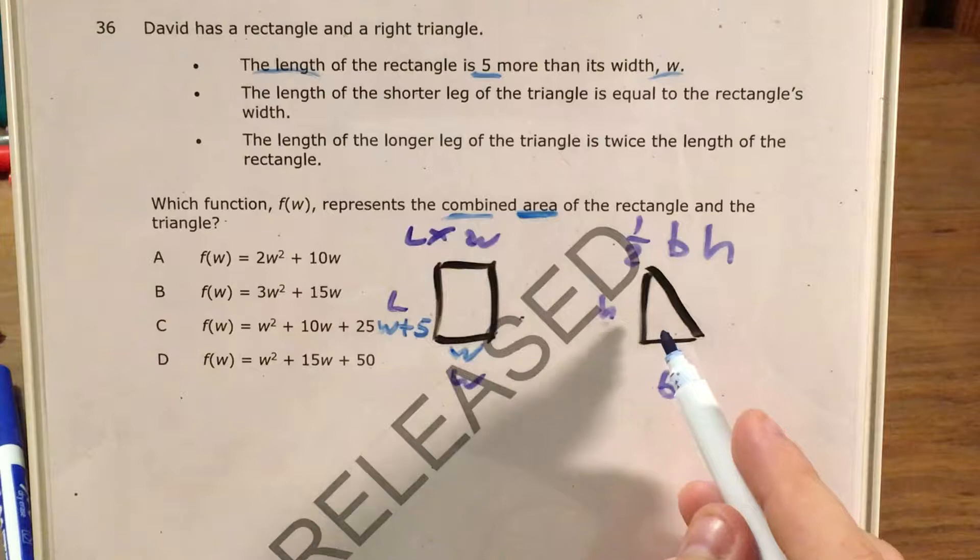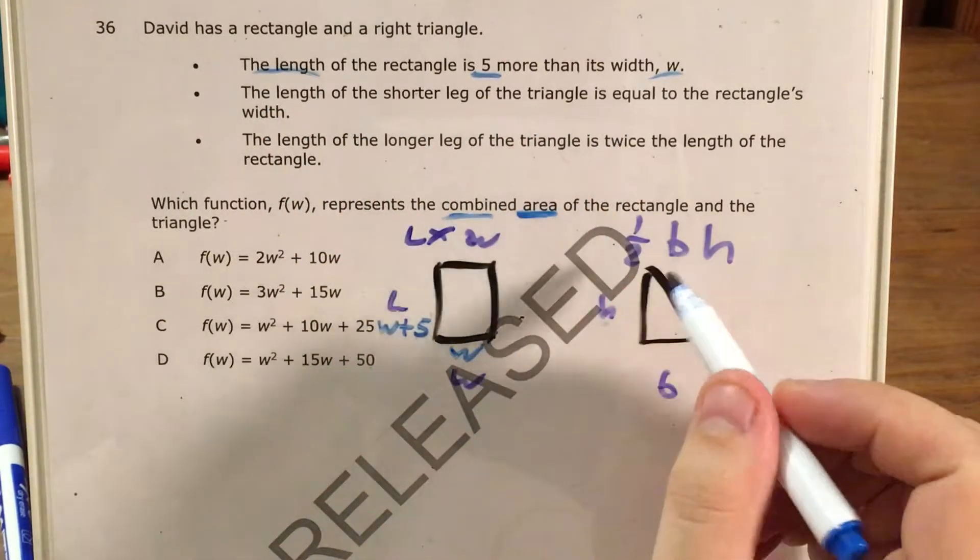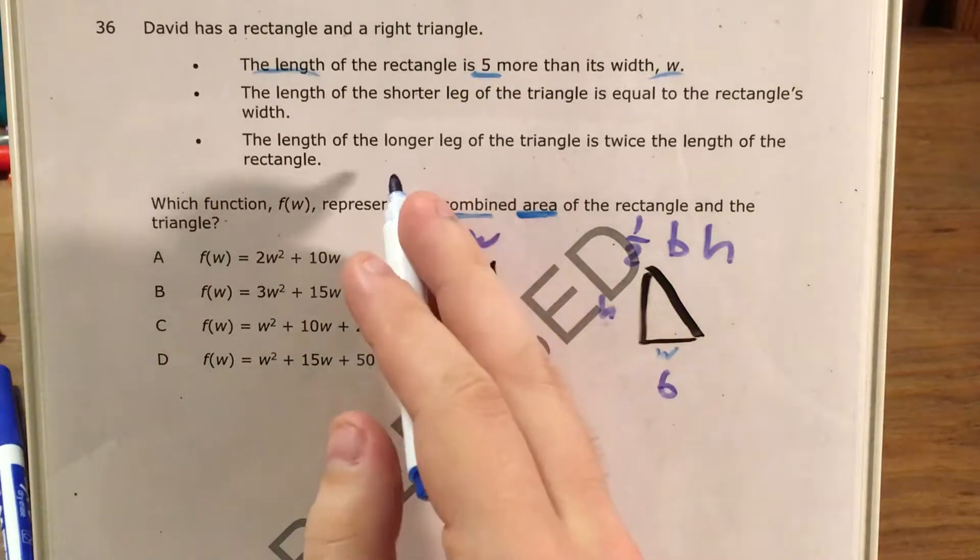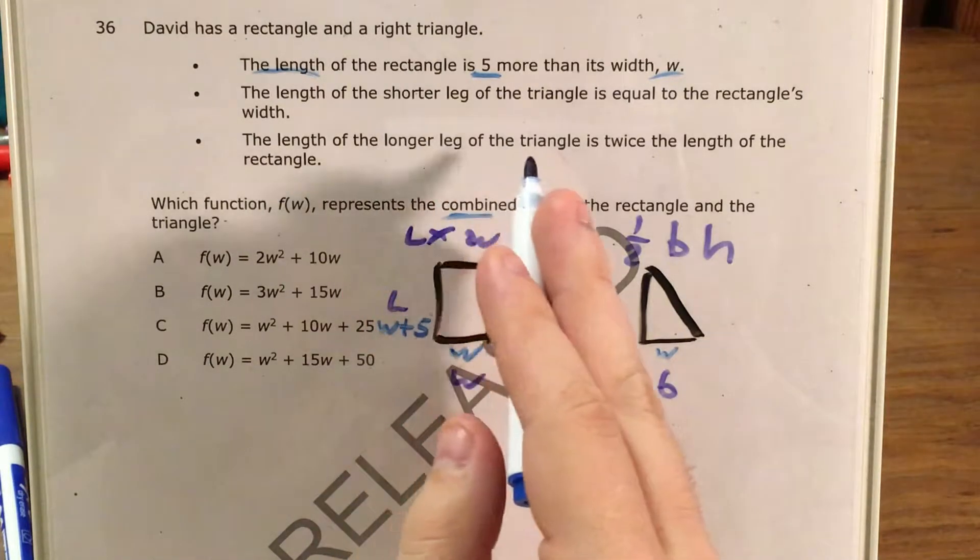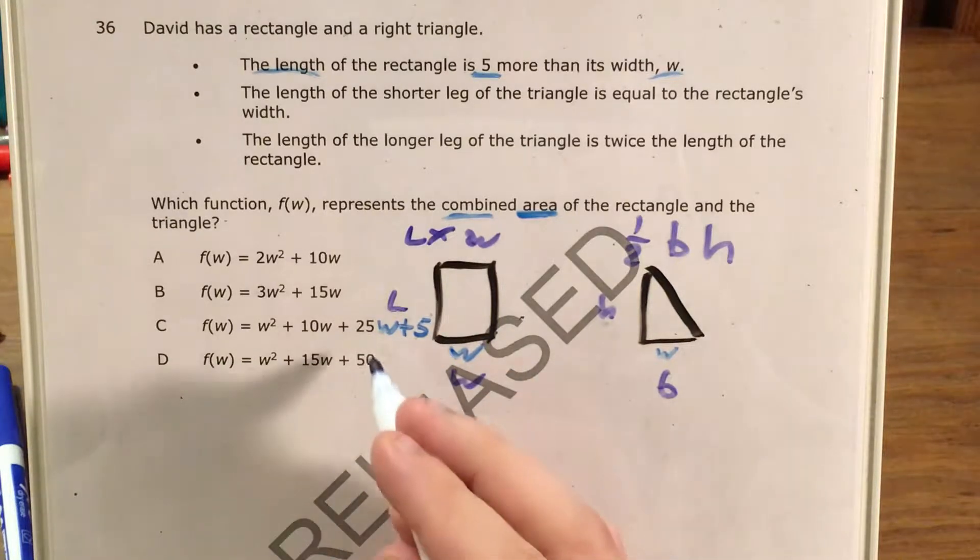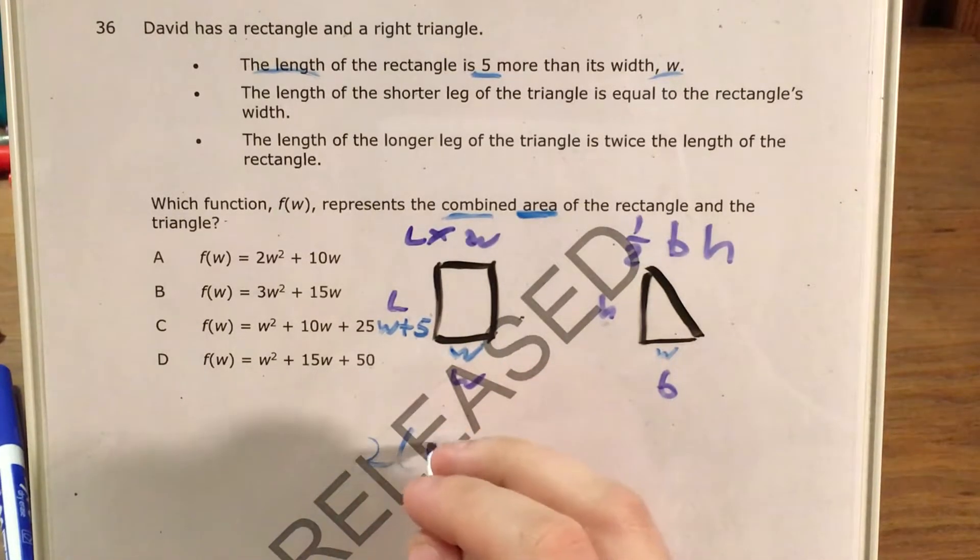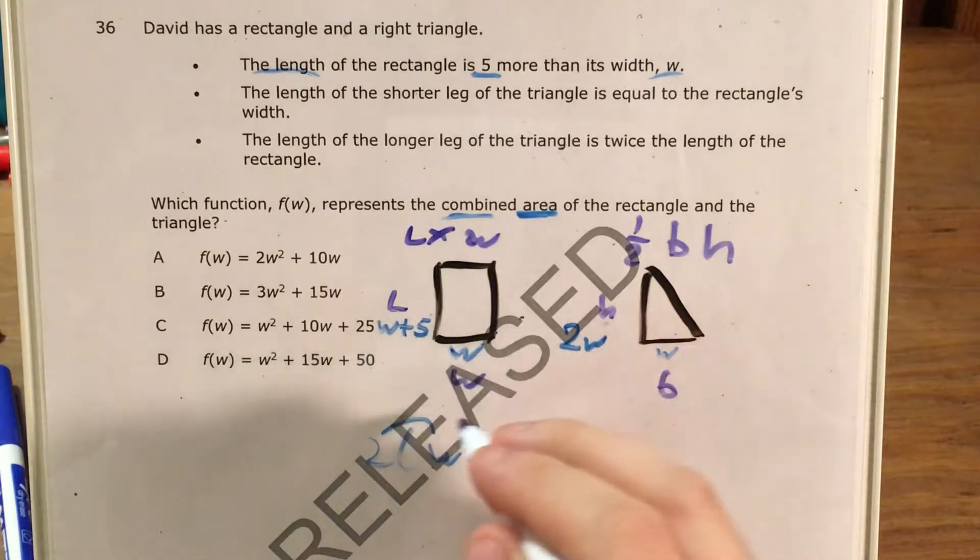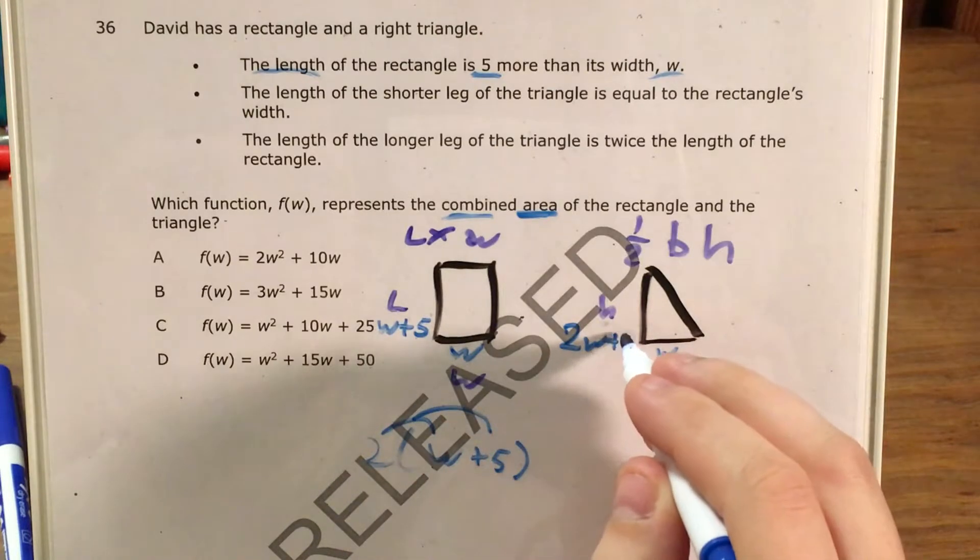I come here to the right triangle, and I see that the length of the shorter leg of the triangle is equal to the rectangle's width, so here's another W. And then the length of the longer leg of the triangle is twice the length of the rectangle, so it's whatever this is times 2. So 2 times (W plus 5). I use the distributive property. That gives me 2W plus 10.